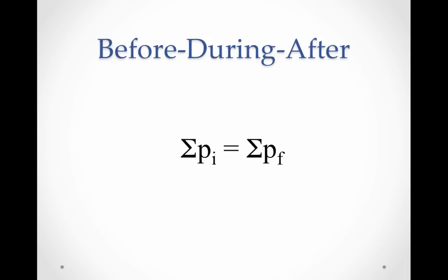As you just saw, for explosions, conservation of momentum predicted what would happen. The initial momentum of the system was equal to the final momentum of the system, even though the 'during' was very abrupt. That's conservation of momentum. We have other types of interactions to look at — specifically collisions — but we'll do those in another video.